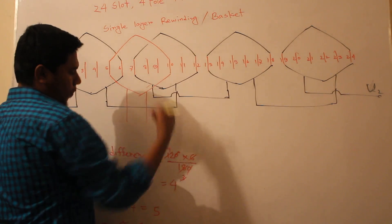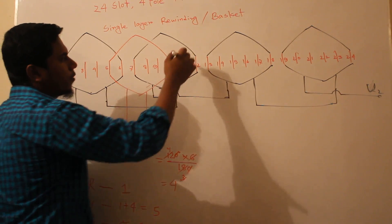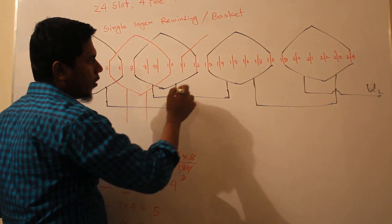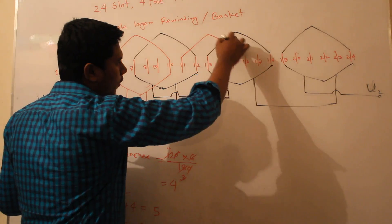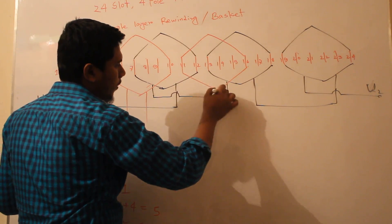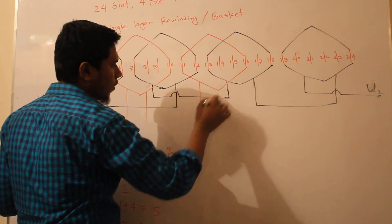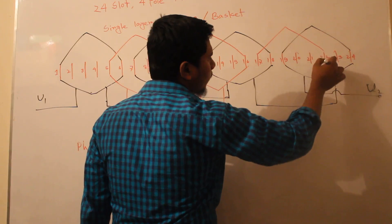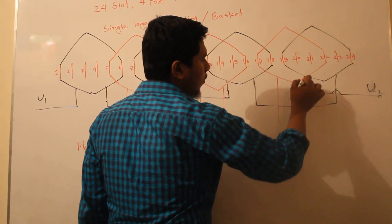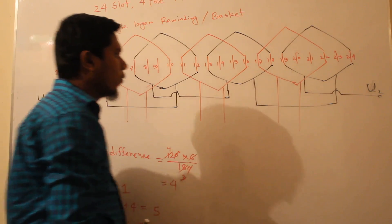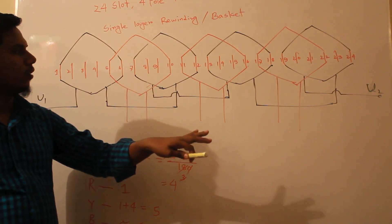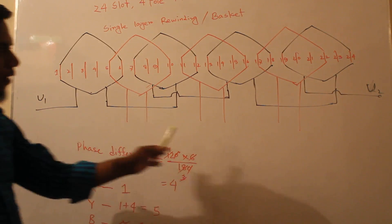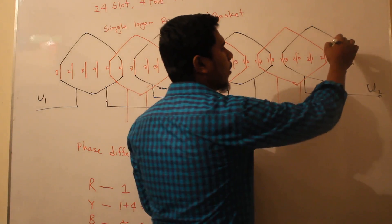The Y-phase next coil starts here at slot 11. The other side of this slot is slot 60. From slot 17 to slot 22, now we draw here 3 coils. These 3 coils make 3 folds.